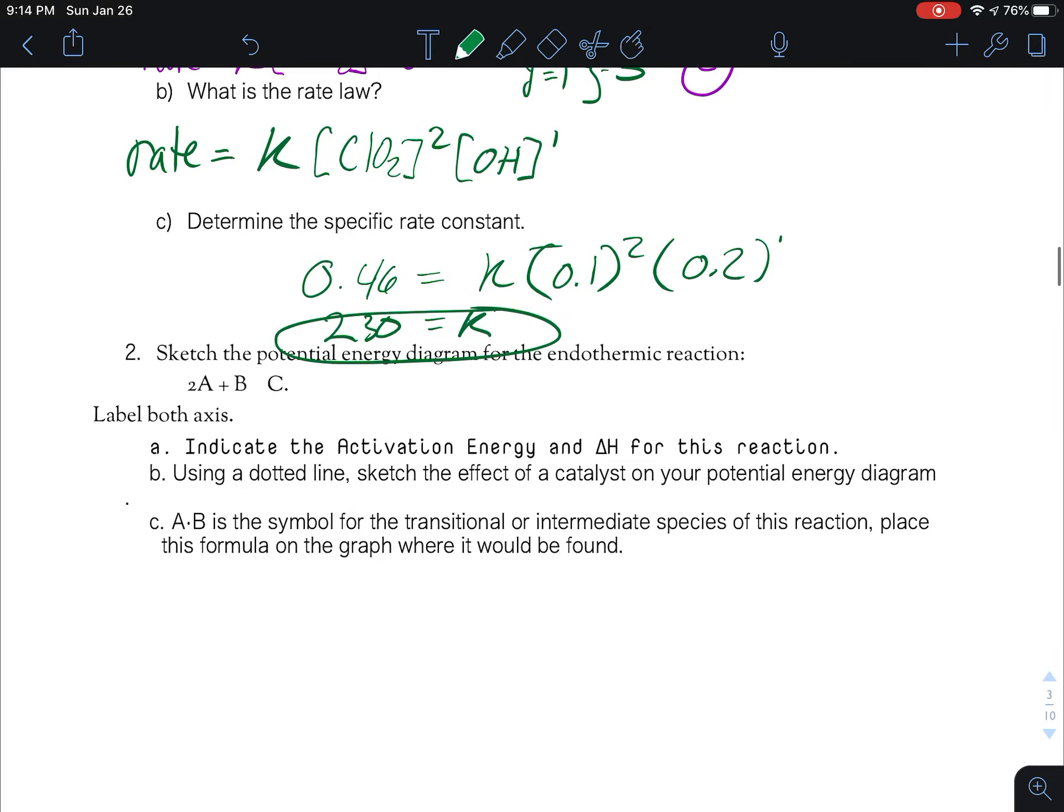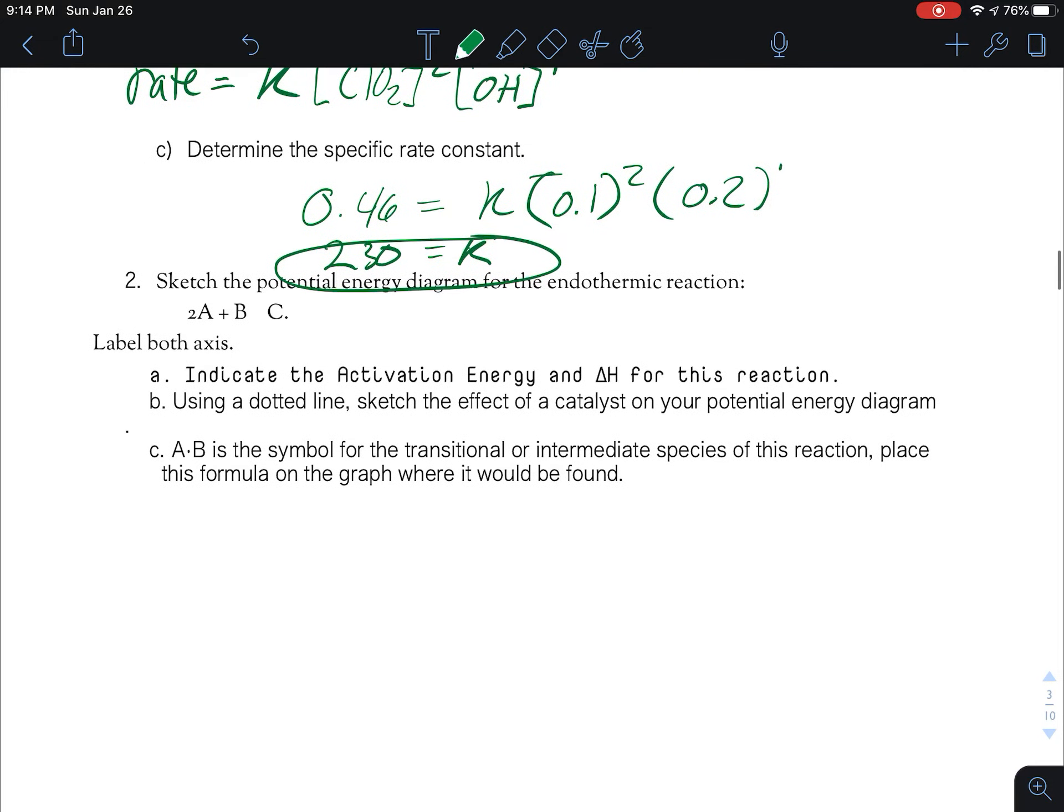All right, sketch the potential energy diagram for the endothermic reaction 2a plus b equals c. Label both axes. Okay, it looks like we just want to sketch it. So I feel like there was a better way this was done, but that's okay. We've done other ones with actual numbers in our class, but let's just follow this. So it says sketch potential energy diagram for this endothermic reaction. So that means it must start here and then it must absorb energy.